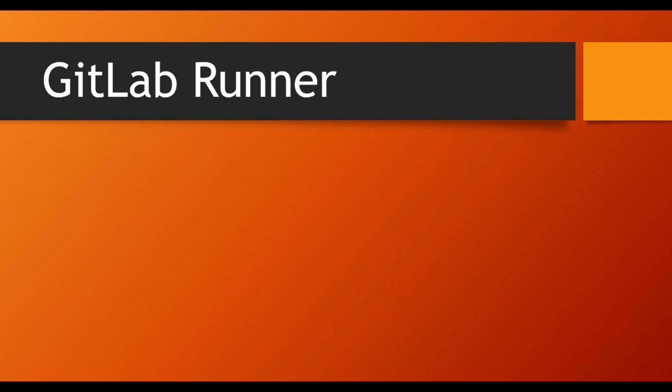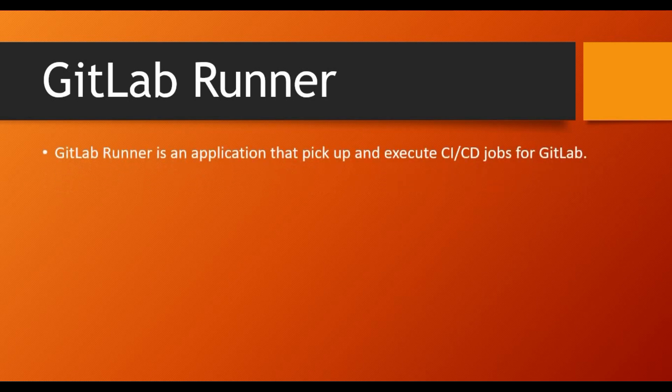If you already know how to set up GitLab Runner you can just skip it and continue with the next tutorial. For those who don't know: GitLab Runner is an application that picks up and executes the CI/CD job for GitLab. It's more like a slave machine — similar to what we call Nodes in Jenkins — where the jobs will be running. GitLab Runner is open source software.